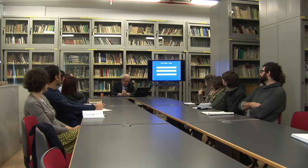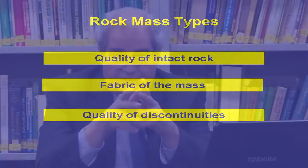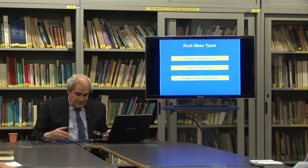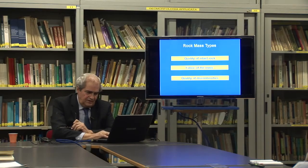I stay with rock throughout this presentation — no soils. We have the quality of the intact rock, but after its genesis, the intact rock did not stay as such. A geological history affected it, and we have a rock mass today. This means we have a fabric of the initial rock — a structure — governed by discontinuities. The discontinuities have a quality on their surfaces. So the intact rock, the fabric of the mass, and the quality of discontinuities make what we call a rock mass.